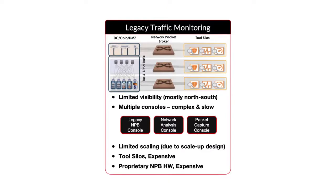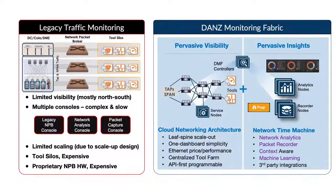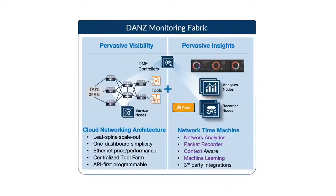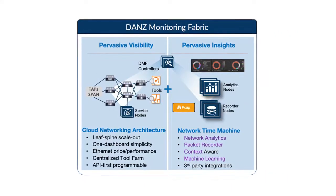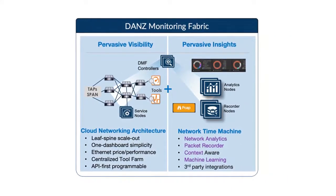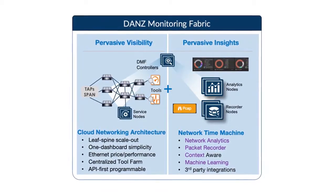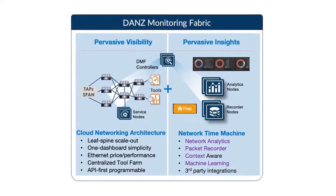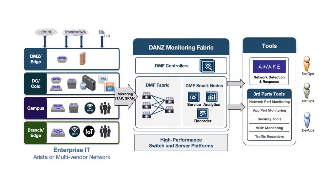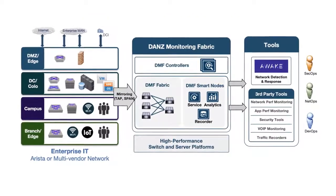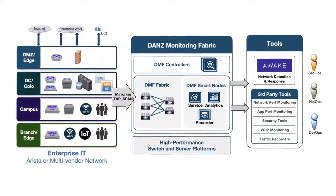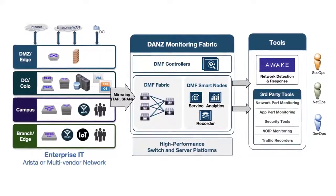To address these challenges, Arista is introducing a new generation of network observability software built with cloud networking principles, data analytics, and contextual insights. The Arista DANZ Monitoring Fabric, or DMF, integrates Arista's DANZ — Data Analyzer technology — with recently acquired Big Switch Networks Monitoring Fabric software. The DMF design uses leaf-spine and clustering architecture for scale-out and the API-first principle for automation.